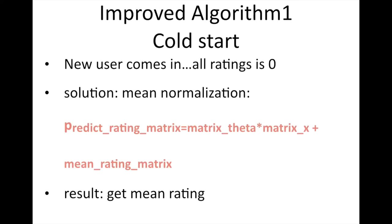These algorithms look good, but there are still some problems in them. The first one is called cold start. The problem is that if there is a new user come in, since we do not have any information about him, we will predict his rating randomly that is useless. So to solve this problem, we can do the mean normalization. We subtract the mean rating matrix from the original matrix in the algorithm. In the predict rating matrix, we add the mean rating matrix back. So now we can predict that the new user has the mean rating for all movies.